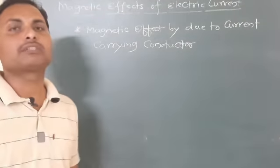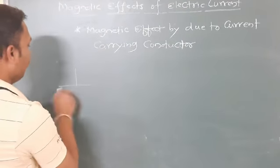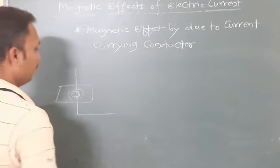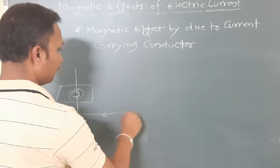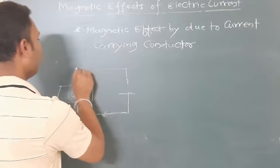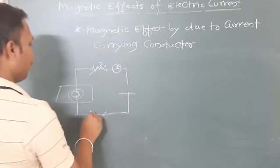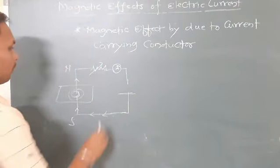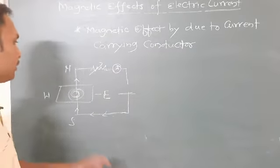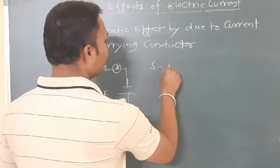Now I will explain Maxwell's rule by taking some examples. Let me take a similar circuit again with concentric circles. If the current is flowing from south to north, the direction of the magnetic field is anticlockwise.